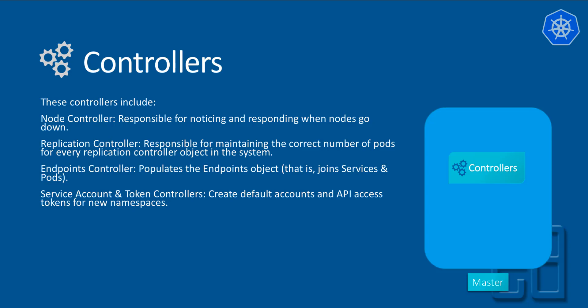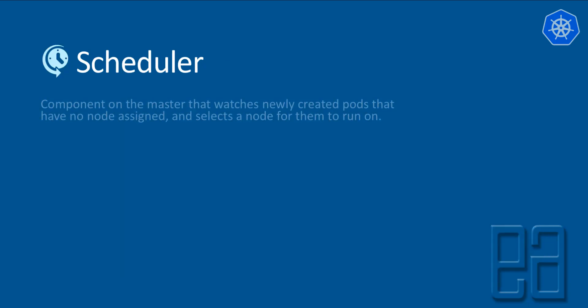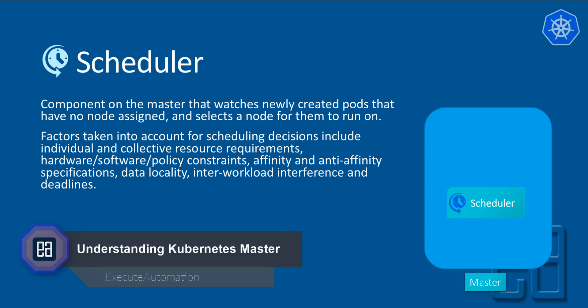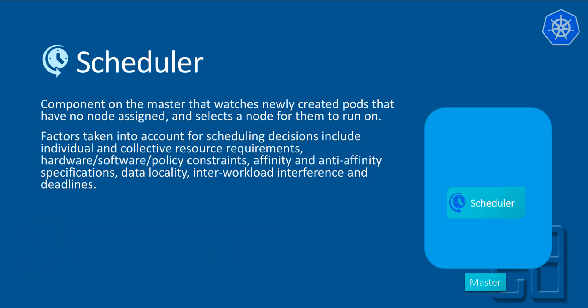Don't worry about the theory yet — these are building blocks we'll discuss in upcoming videos. The only place we interact with is the API server, so these things are more theoretical than practical for now. Finally, the scheduler on the master watches newly created pods that have no node assigned and selects a node for them to run on. Factors for scheduling decisions include resource requirements, hardware/software policy constraints, affinity and anti-affinity specifications, data locality, inter-workload interference, and deadlines.